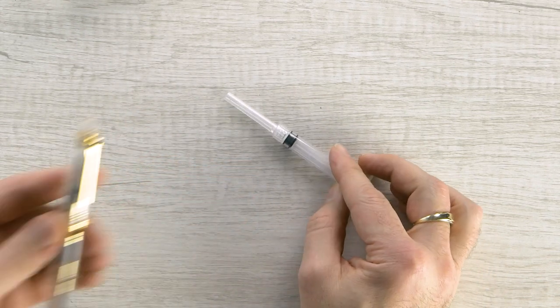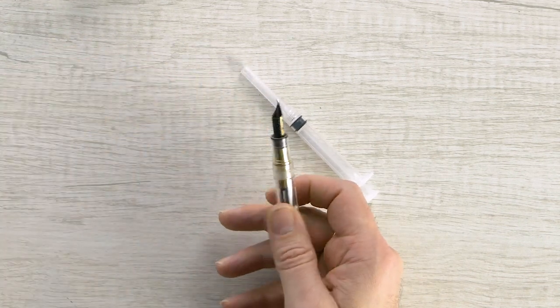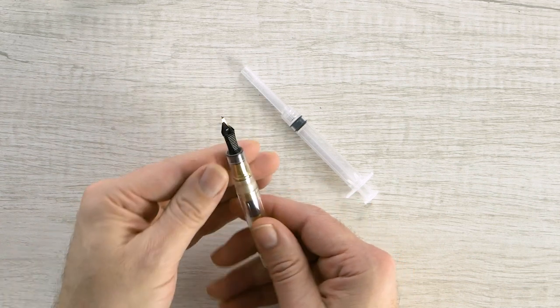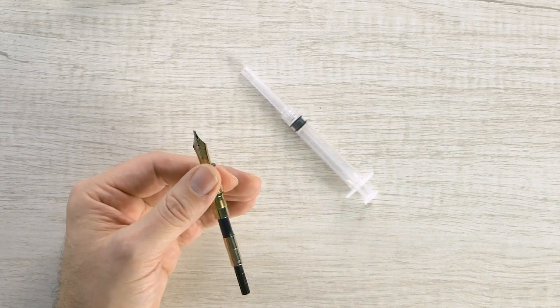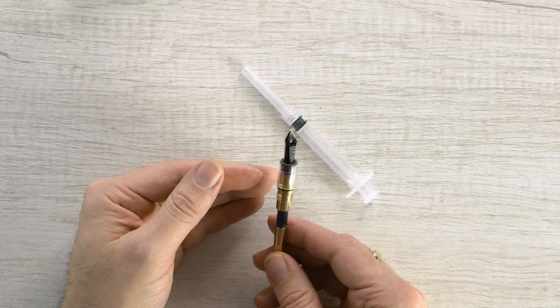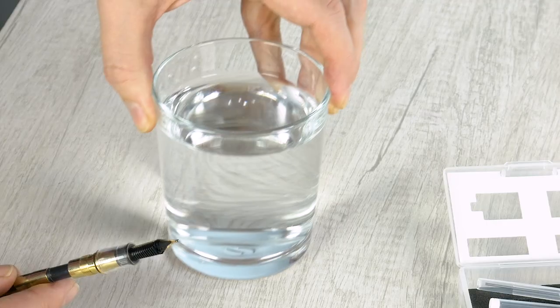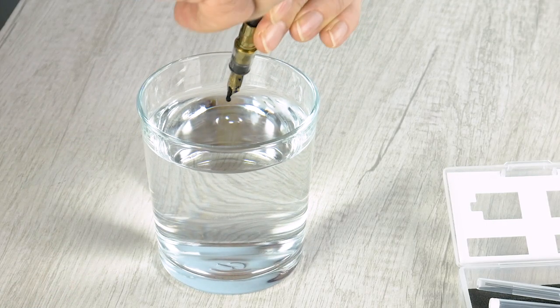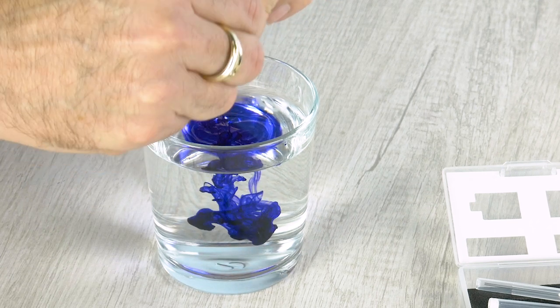So I have here a 1911 large that I've got some old ink in, you can see, and we're going to show you how this easily helps you flush your pen. Now normally you've got a converter and you can try to flush some of that out. I'm just going to empty some of that in there and I'm going to pull this out.